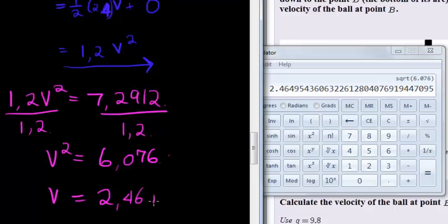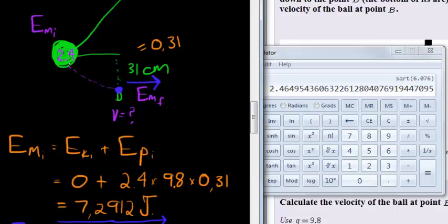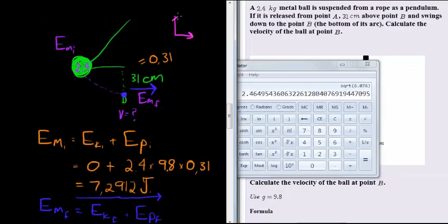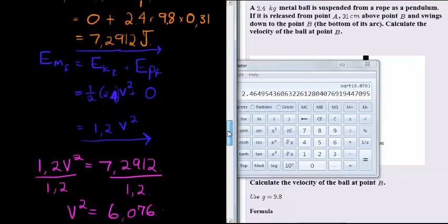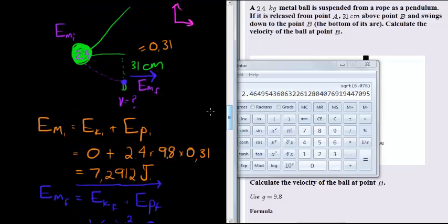2.46 meters per second. That is my velocity. Now I should take plus or minus, but in this case I'm not just traveling up and down, I'm actually traveling up, down, left, and right, so plus or minus means very little.